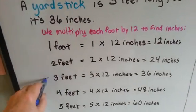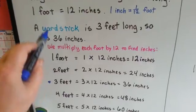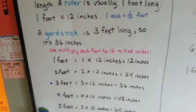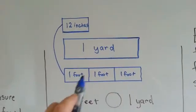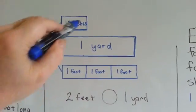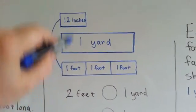This right here would be one yardstick. It's 36 inches. Three feet. So a yardstick is three one-foot lengths. 12 inches is one foot total.